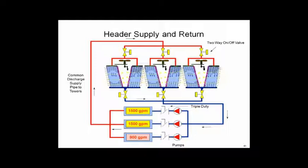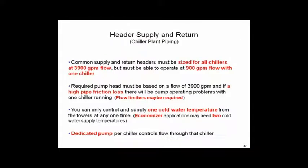Summary of header supply/return piping: the common pipes must be sized for all chillers at 3,900 GPM, and the pump head is required for that full flow. Operating with one pump in winter — through pipe sized for summer full flow — may send the pump off to the right side of its curve. You might need a flow limiter on the chiller. There's also a dedicated pump per chiller: when you turn the pump off, flow stops. This is important — you cycle the chiller and its condenser water pump on and off together.